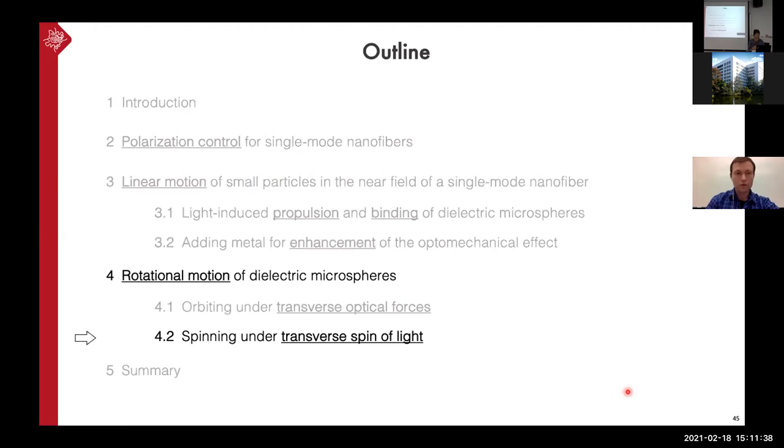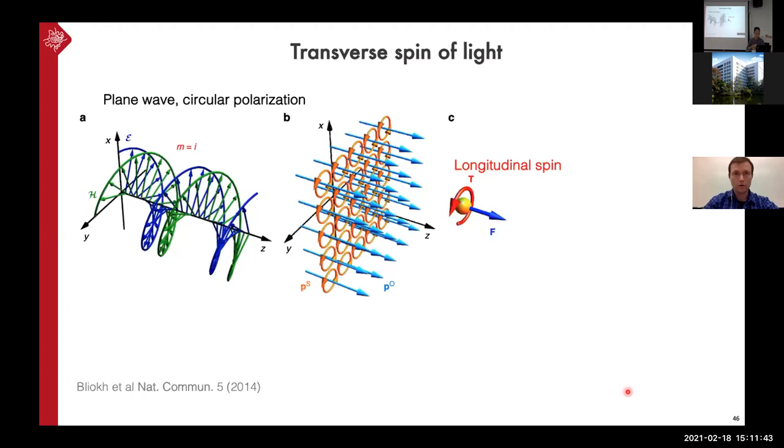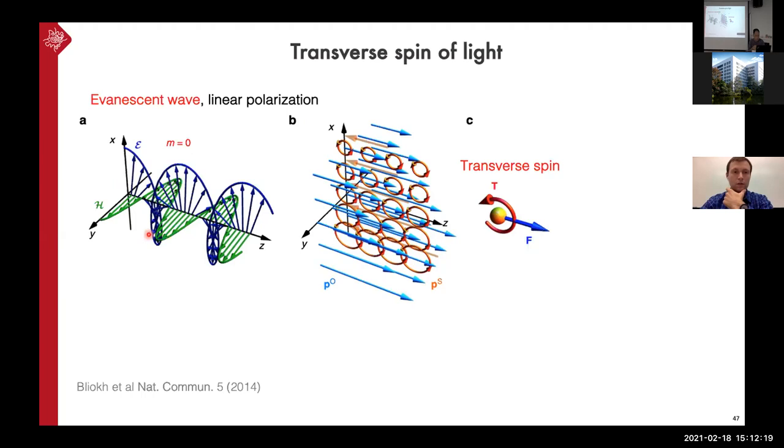All right. So the final project I'm going to talk about is about the transverse spin of light, which is quite a bizarre concept. So it has been developed mostly in the last decade. So it appears because of the rotations of the field in the plane of propagation. So if we have the plane wave, all the electric field is in the transverse plane. And there is only longitudinal spin we can achieve on the particle. And the particle can rotate around the direction of propagation. But if we have, let's say, evanescent wave, then this electric field vector is making this circulations in the transverse direction. So this is creating this transverse spin, which is falling quickly away from the surface at which the wave is getting evanescent.